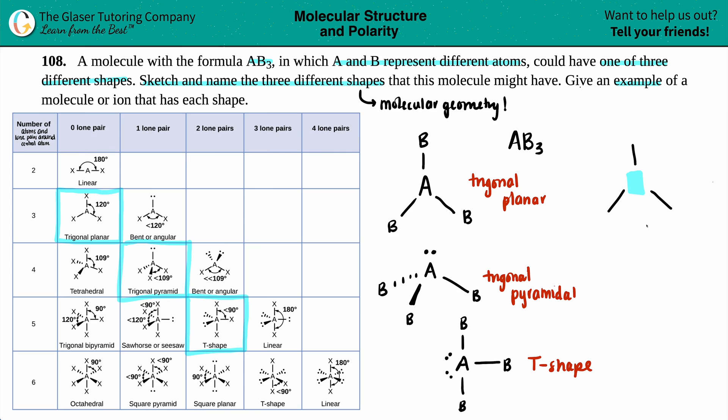Now we can give it the octet by giving a double bond. Keep in mind that these molecular structures, the bonds are not set in stone. The only thing that matters is the correlation between the number of atoms bound and the lone pairs.